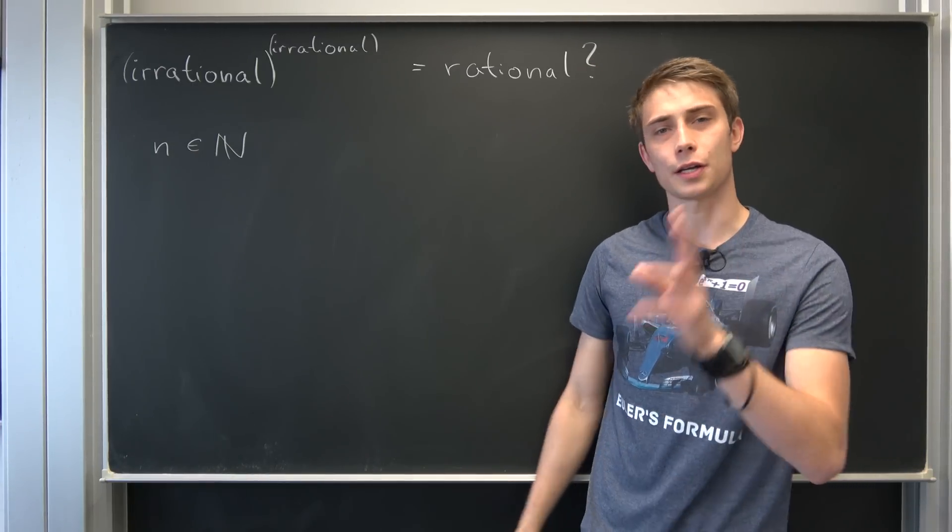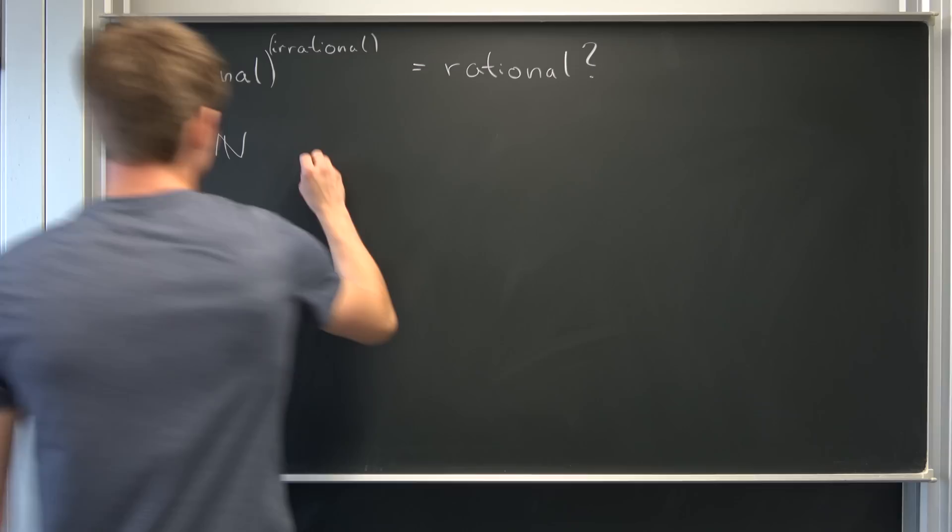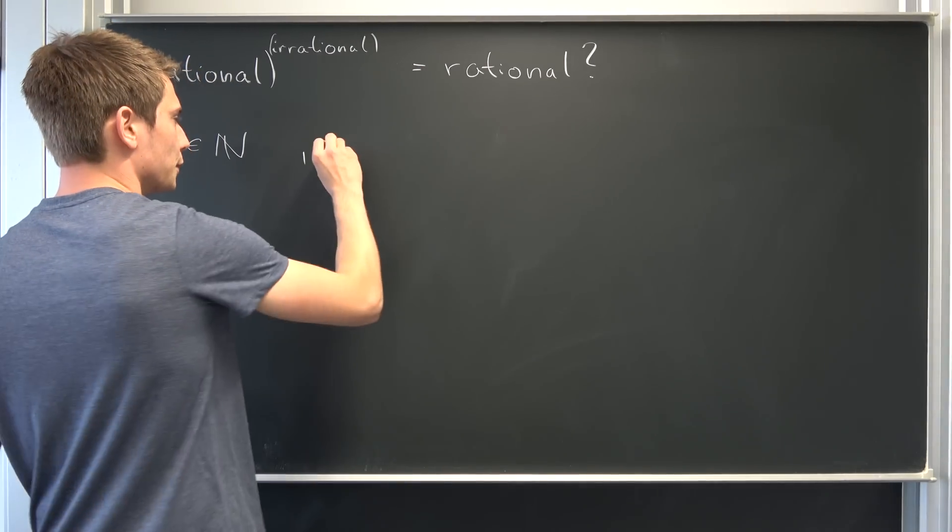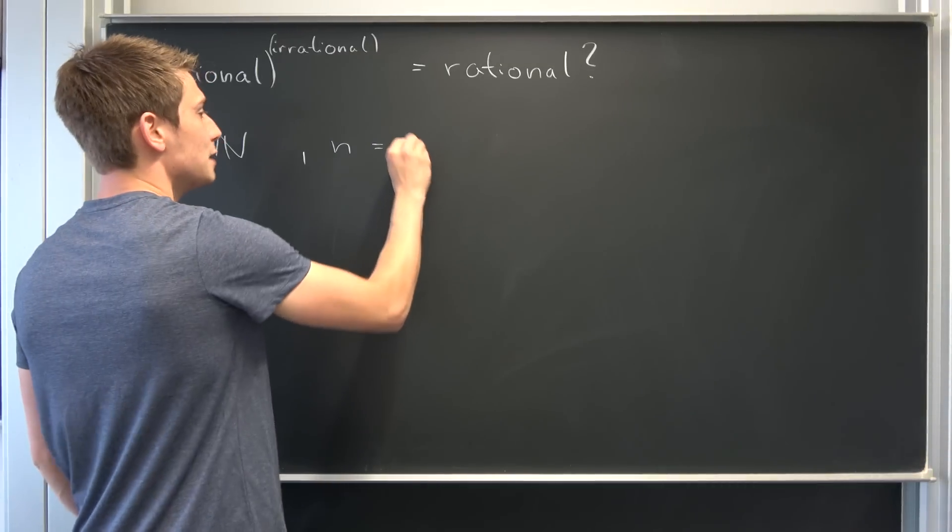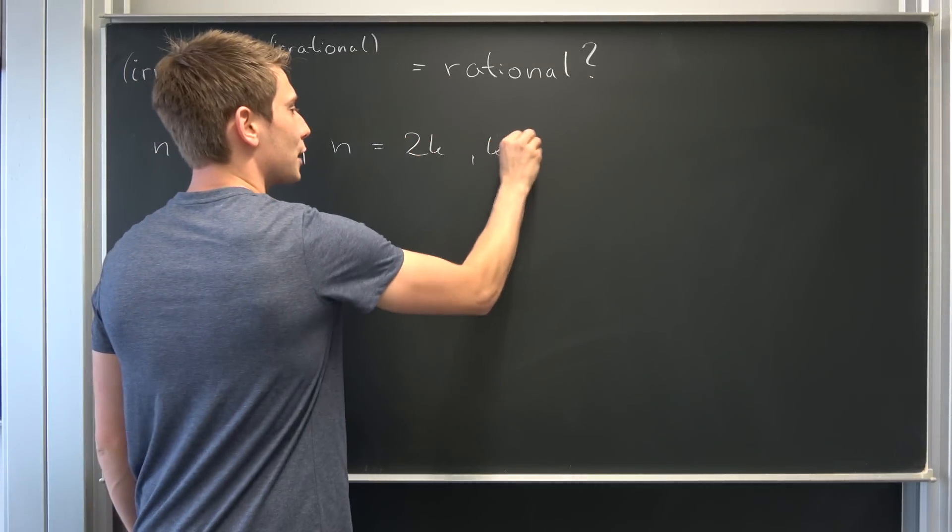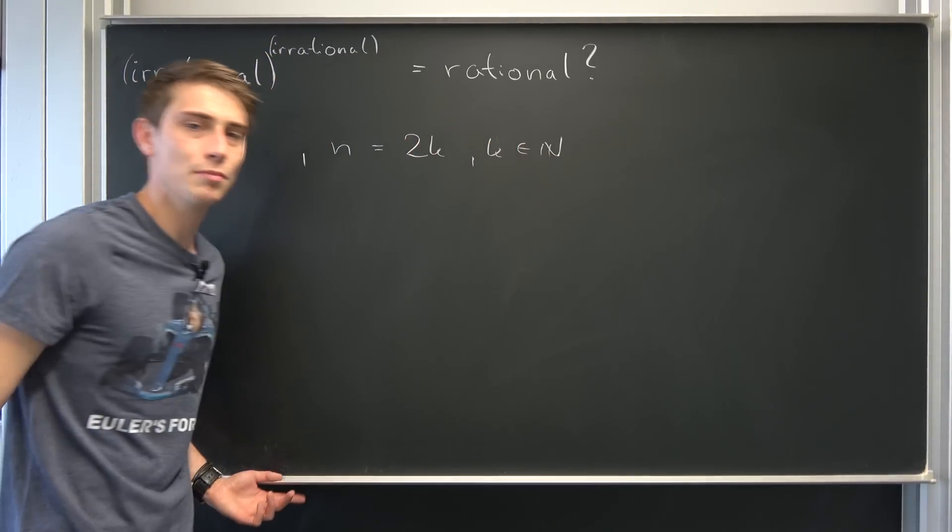At first we would like n to be even. You will see later why this is important. So n being even means that we can decompose n into 2 times k, where k is element of natural numbers.